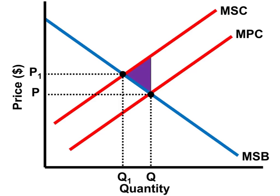This market is overproducing this good. P and Q is what the private market is providing. P1 and Q1 would be socially optimal because that's where the marginal social cost would equal the marginal social benefit.